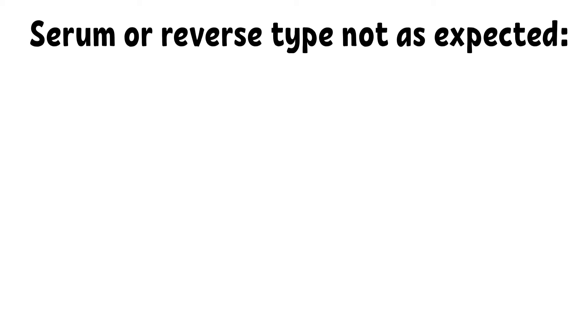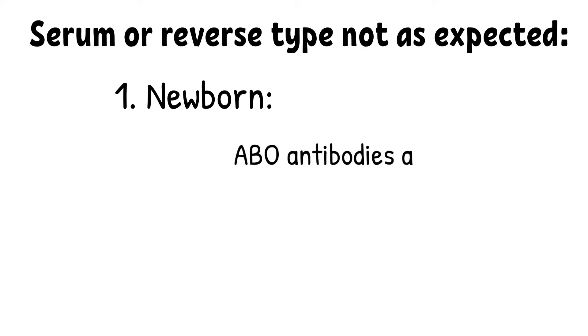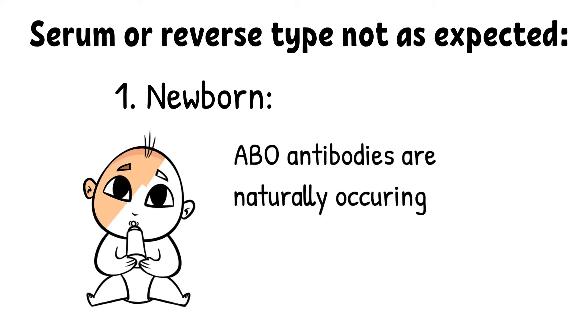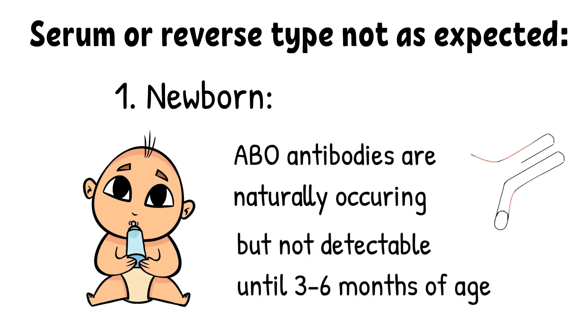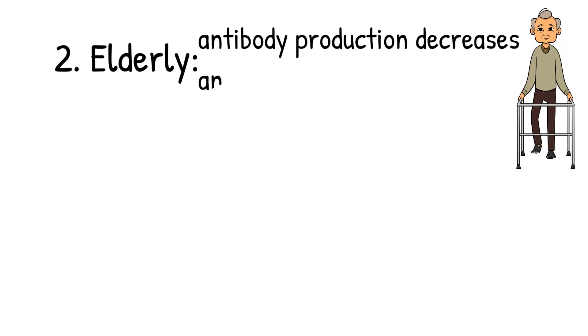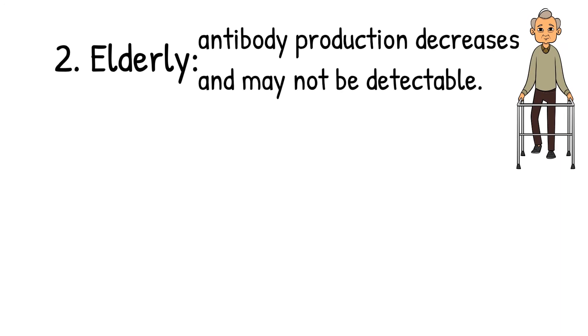If the reverse reaction is weak or absent, it can be due to the following reasons. First, newborns — even though ABO antibodies are naturally occurring, the production of anti-A and anti-B antibodies is not detectable until about the age of 3 to 6 months. Second, elderly — as the patient ages, antibody production can decrease to a level that cannot be detected in the patient's serum or plasma.